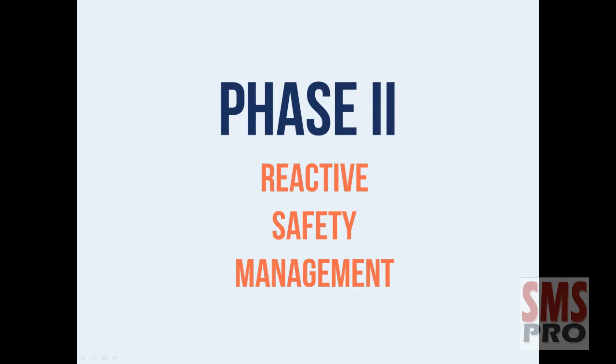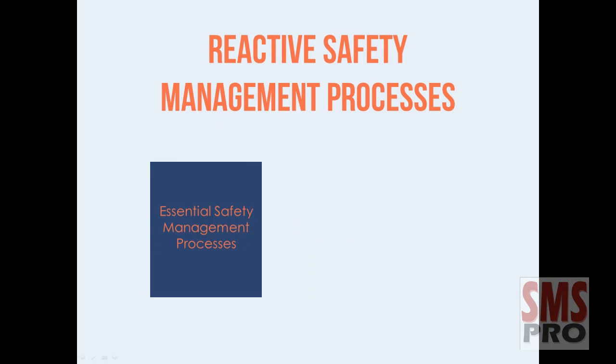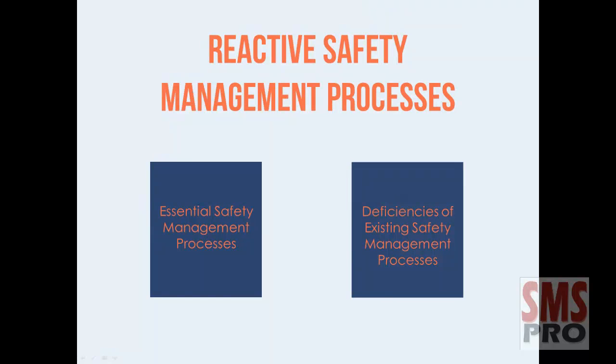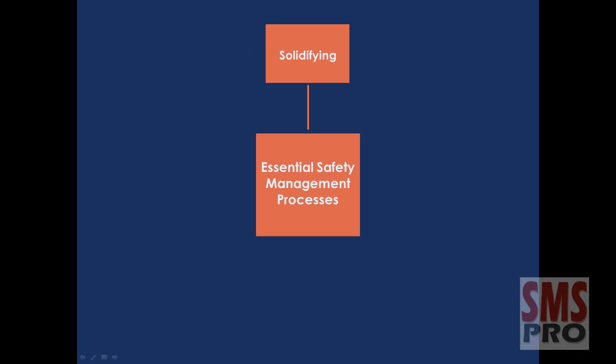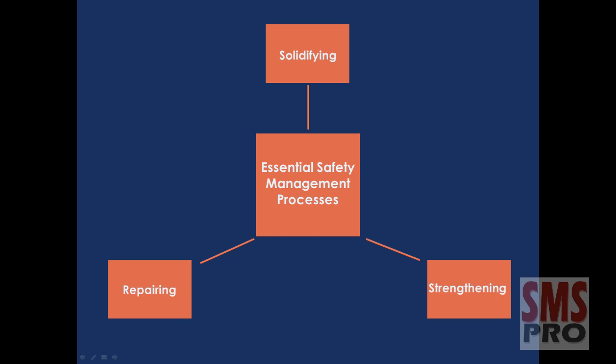Phase 2 tasks implement essential safety management processes. Deficiencies of existing safety management processes discovered during the gap analysis from Phase 1 will also be focused on. ICAO's Phase 2 focuses on solidifying, repairing, and strengthening existing safety processes and developing those which do not exist yet. During this phase, aviation service providers are not looking ahead and analyzing data to detect future events. Therefore, Phase 2 is known as the reactive phase of an SMS implementation.